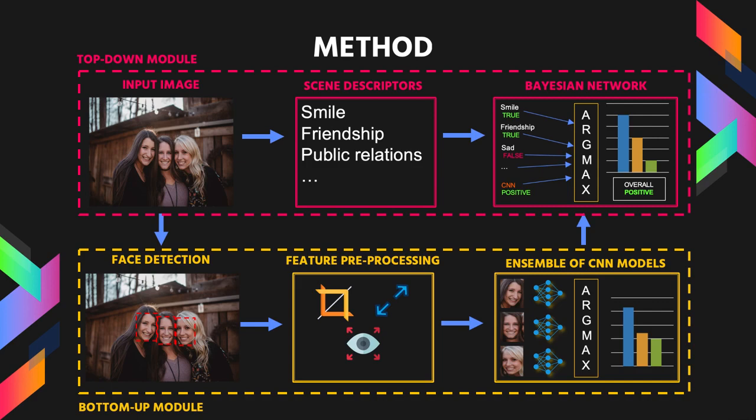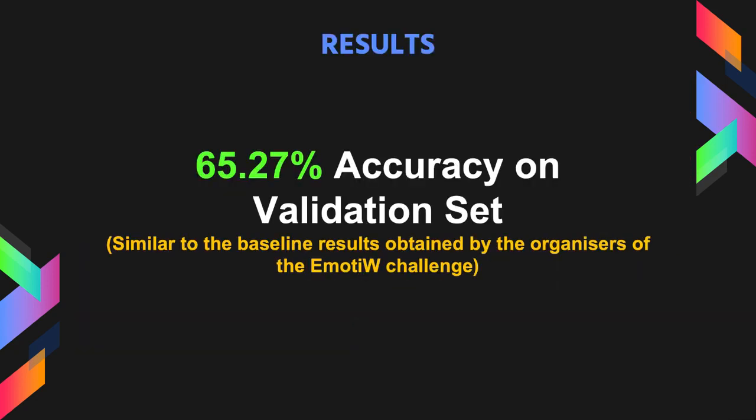In order to integrate both the modules, the output of the bottom-up module can be passed as input into the Bayesian network in the top-down module. Using this method, we achieved an accuracy of 65.27% on the validation set, which is very similar to the baseline results obtained by the organizers of the EmotW Challenge, who used a very deep Inception version 3 neural network.